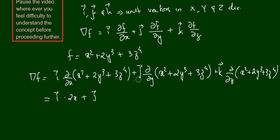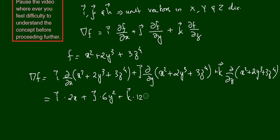For the j term, the partial differentiation is with respect to y, so it acts only on 2y³. The result is j times 6y². For the k term, ∂/∂z acts only on 3z⁴, giving k times 12z³. So the result is i(2x) + j(6y²) + k(12z³).